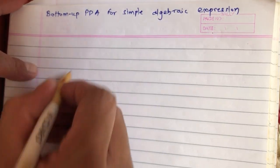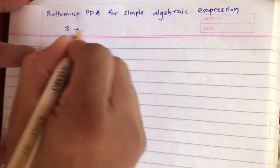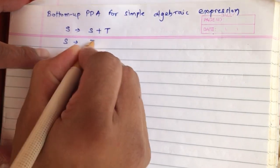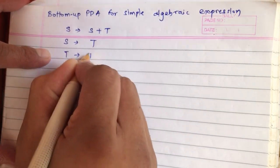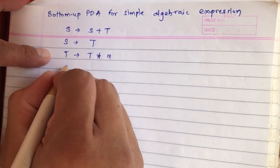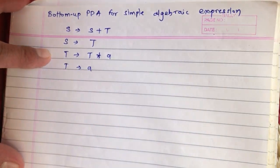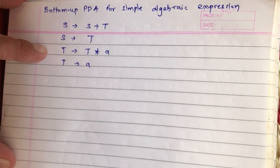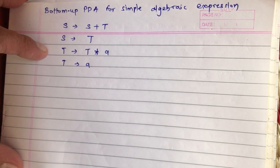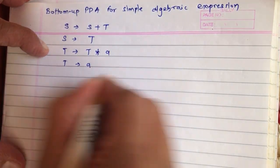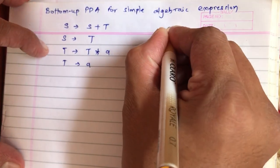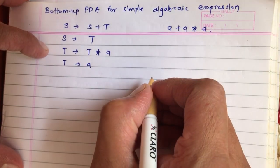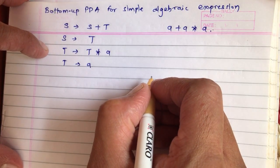Suppose you have been given a grammar for algebraic expressions as: S gives S plus T, S gives T, T gives T multiplied by A, and T gives A. Suppose the input string that has to be processed is A plus A multiplied by A.